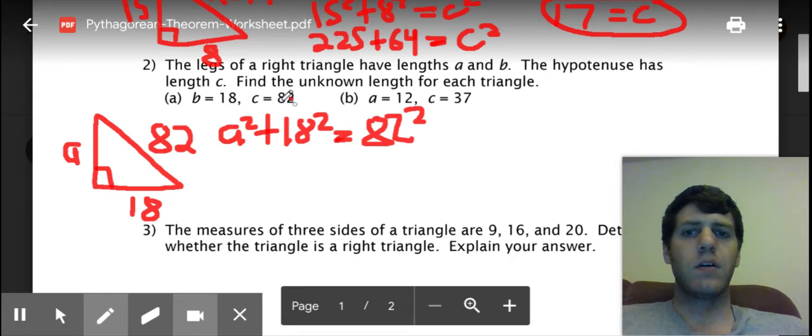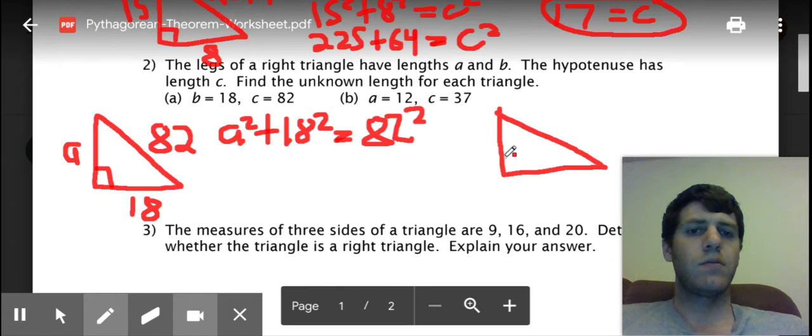Okay and then you can solve for a squared. You square them both, you subtract, and then take the square root. Okay and that'll give you your answer for a. For b you got to do the same thing, so again you're going to want to draw another right triangle. We know the hypotenuse is 37, the c, and then a is 12, and then we're looking for b, the other leg. And then you do the Pythagorean theorem again there to solve.